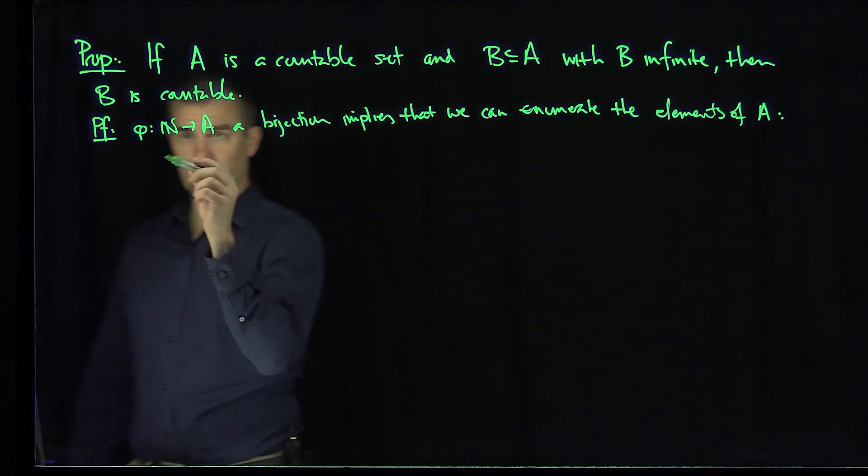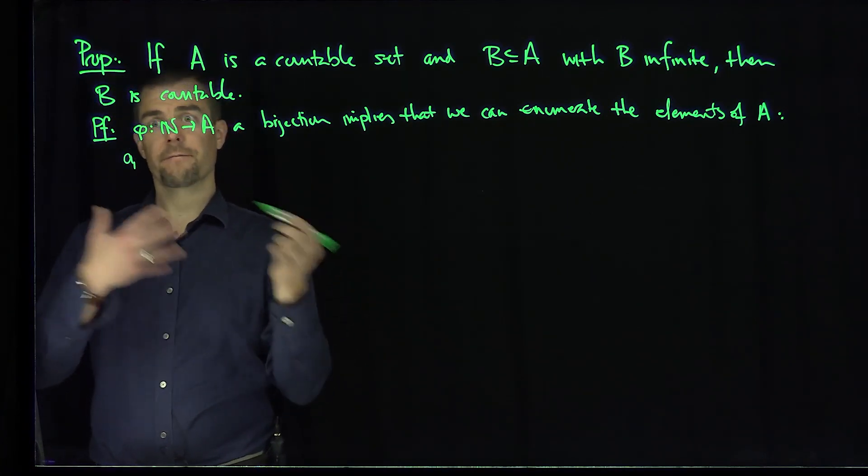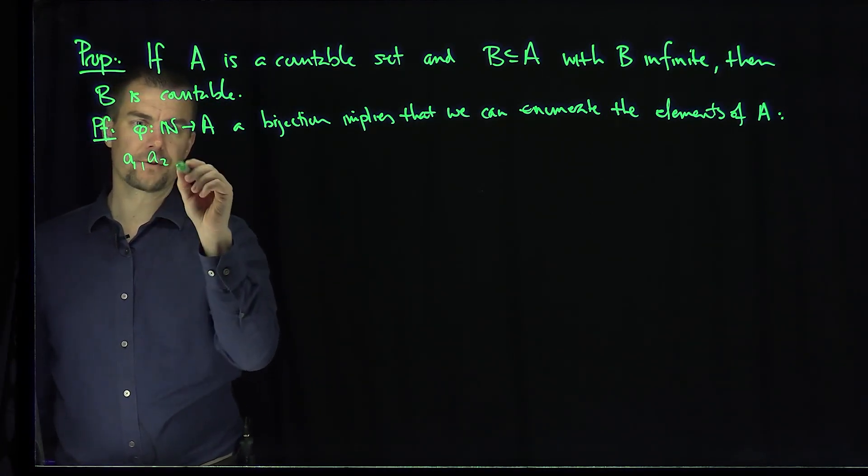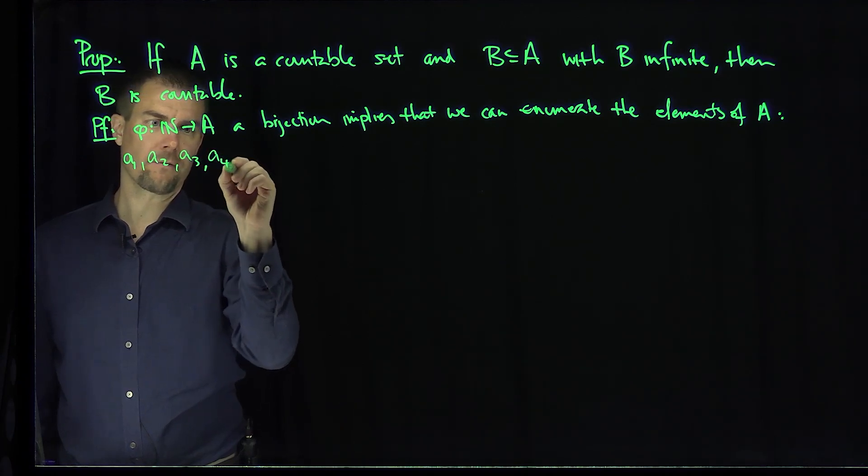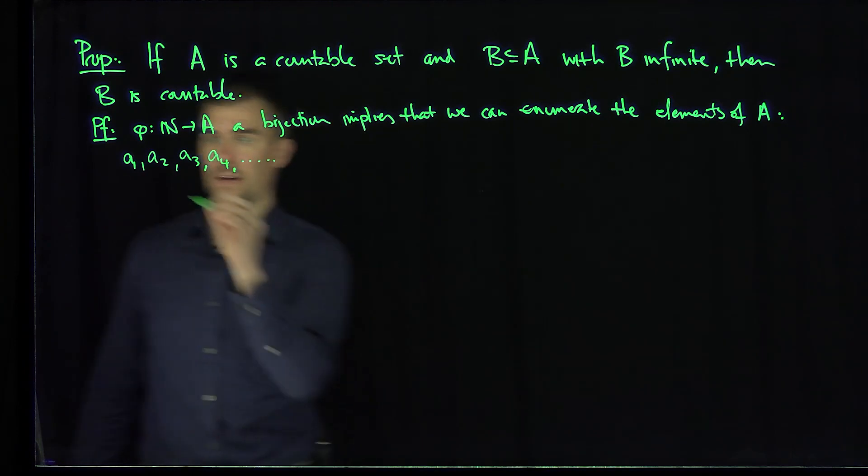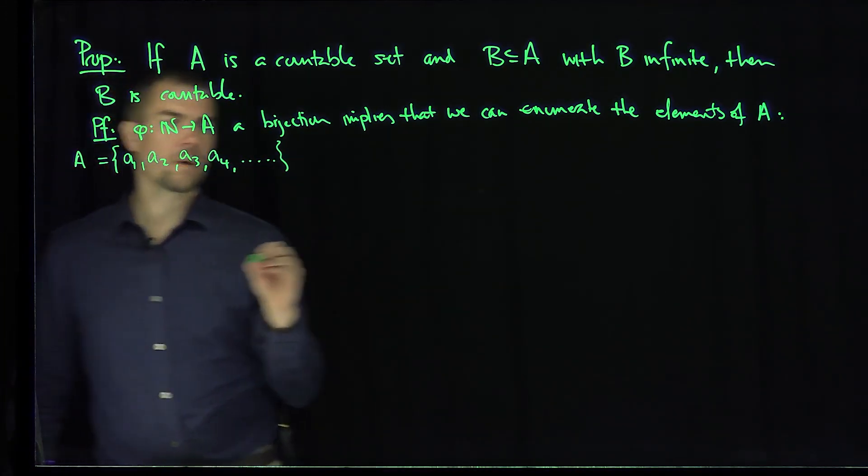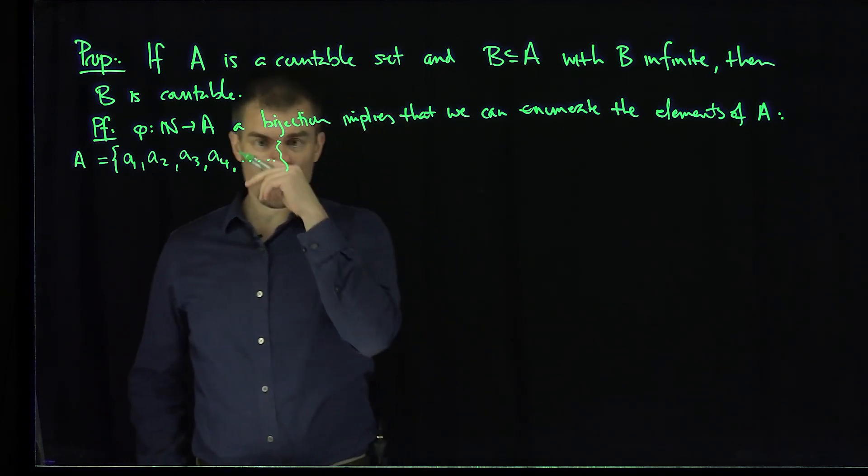And we can do so as follows: we can write them as A1, of course A1 is going to be corresponding to phi of 1, right? A2 corresponding to phi of 2, A3, A4, etc. forever. So that's the enumeration of the points in A, so that's what A is. A is the set over here.